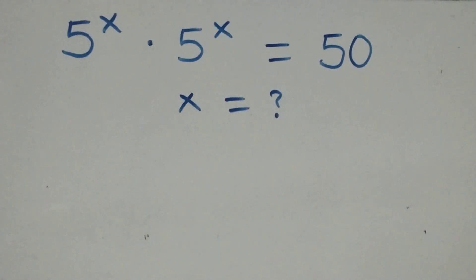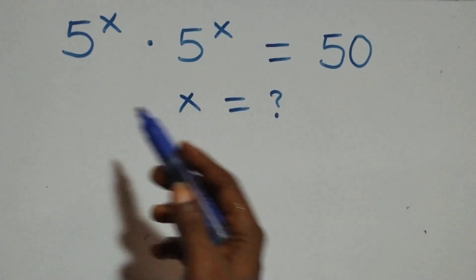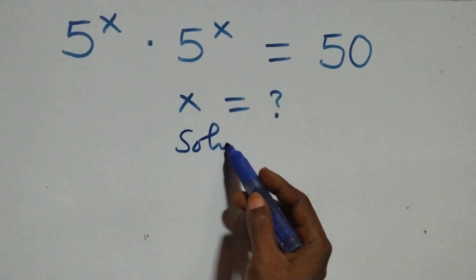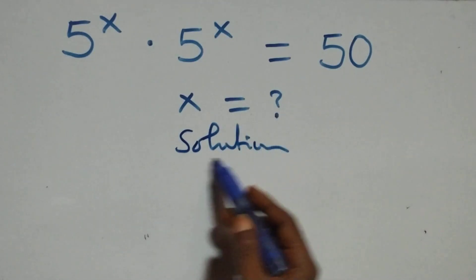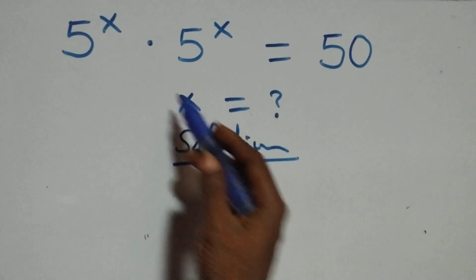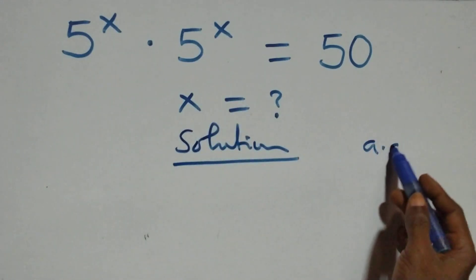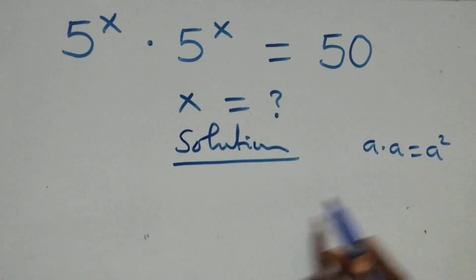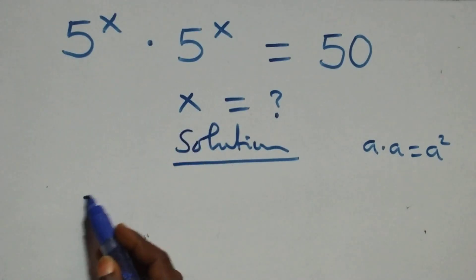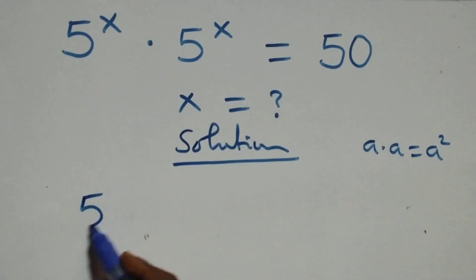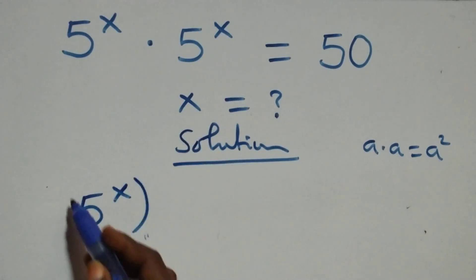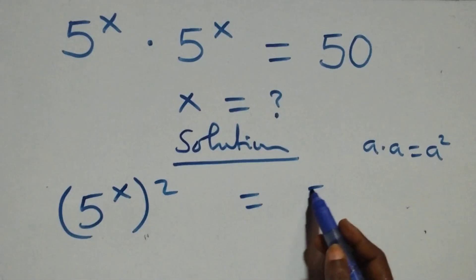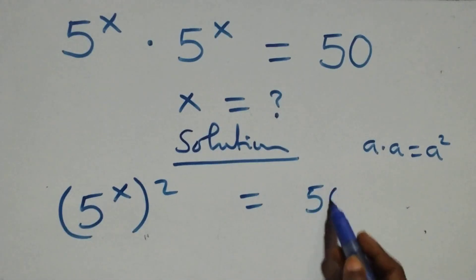Hello, you are welcome. Here we solve this nice exponential equation. We have a times a, which can be written as a squared. This same thing gives us five raised to power x, all squared, equals fifty on this side.